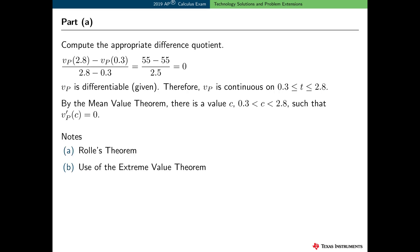Let's take a closer look at the solutions. Remember, this was a calculator-active question, so let's consider the use of technology to visualize and solve some of these problems. In Part A, I'm going to focus on the solution using the mean value theorem. First, we need to recognize the need to examine a difference quotient. The average acceleration of the particle between t equal 0.3 and t equal 2.8 is given by this expression, and it's zero in this case.